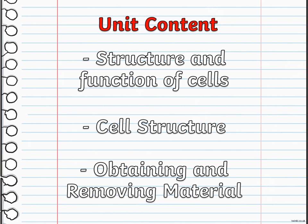Moving to the second lesson, which is cell structure. Your main objective for this content is to develop and use models to identify the parts of a cell, especially the nucleus, chloroplasts, mitochondria, cell membrane, and cell wall. You are also going to describe how each part of a cell contributes to the function of the cell as a whole. You are also going to compare and contrast, using graphic organizers, the structure and function of major parts of plant and animal cells.